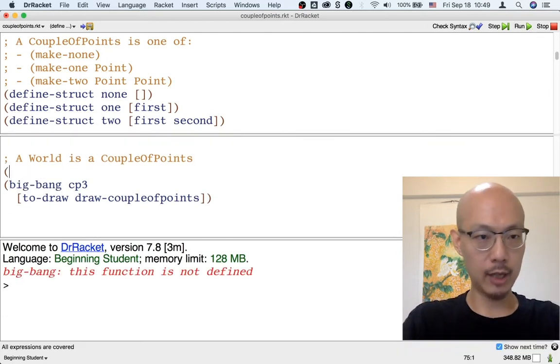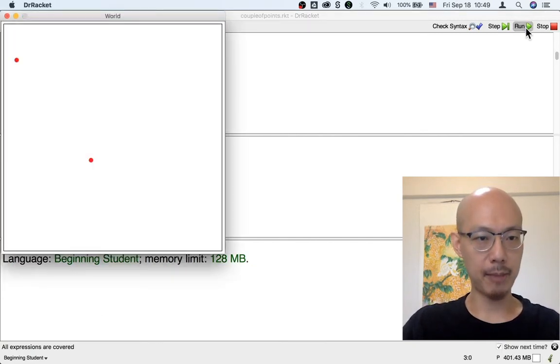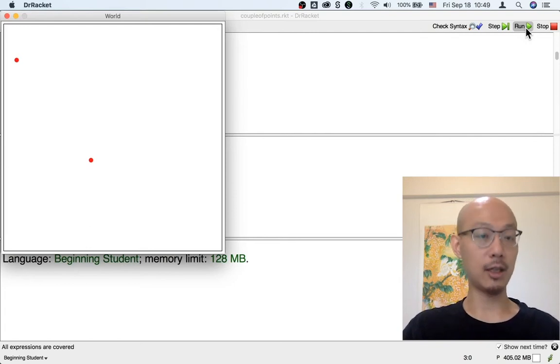Now, I do need to require the universe library so that I get the Big Bang. That's it. This is a Big Bang. It has the initial world staying as the current world, and it draws it using the function drawCouplePoints that we just designed.